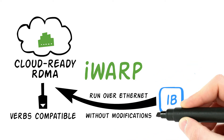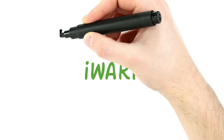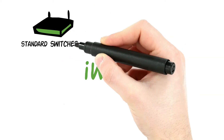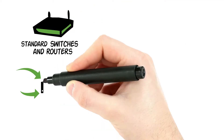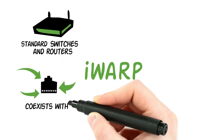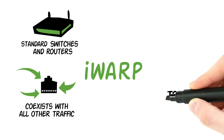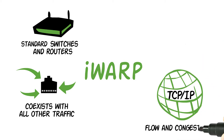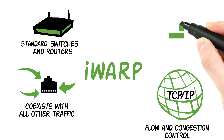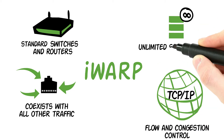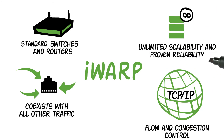Most importantly, iWarp uses legacy switches and routers, and easily coexists with all other traffic. Its standard TCP/IP foundation, complete with flow and congestion control mechanisms, allows it unlimited scalability and proven reliability.